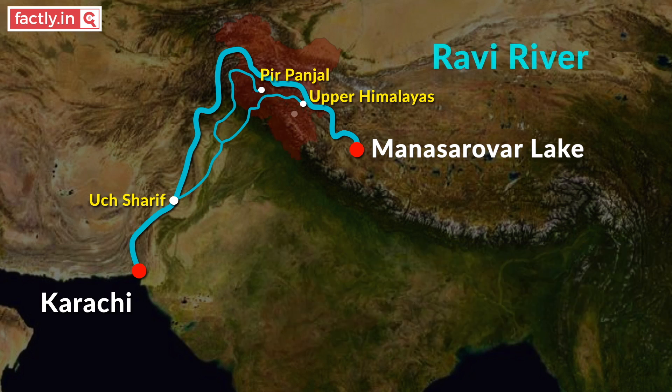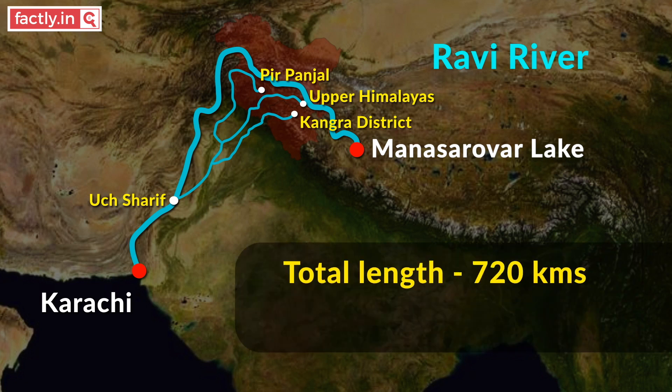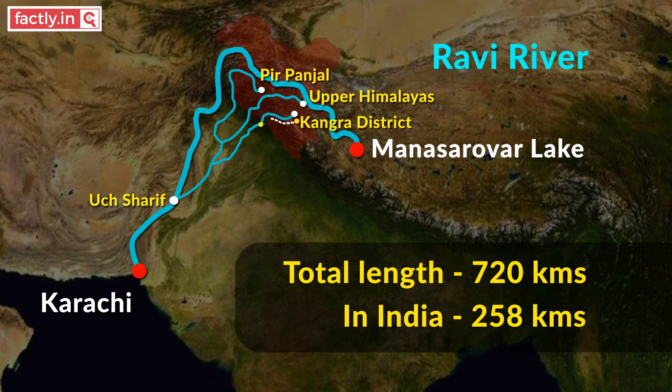Ravi is a transboundary river of India and Pakistan. It originates in Kangra district of Himachal Pradesh, travels for 720 km, and joins the Chenab river. According to the Indus Water Treaty, the waters of Ravi river belong to India. The length of Ravi in India is 258 km.